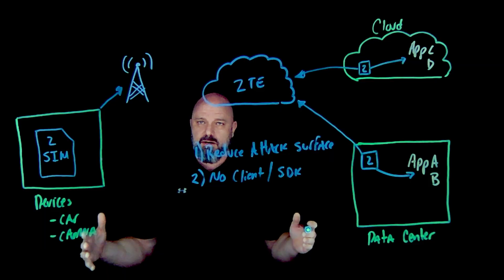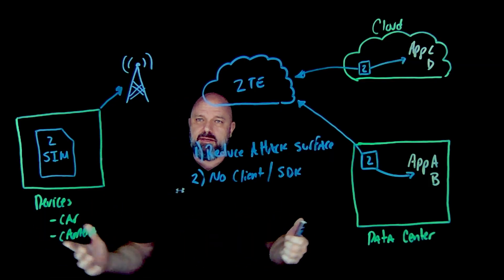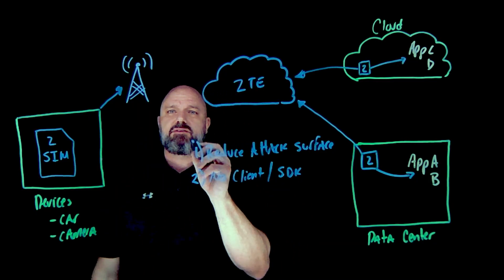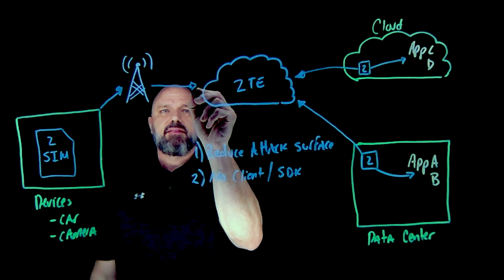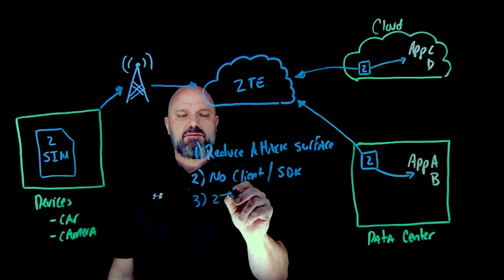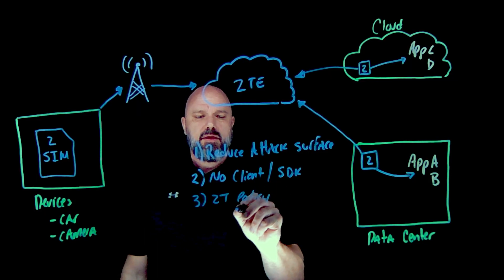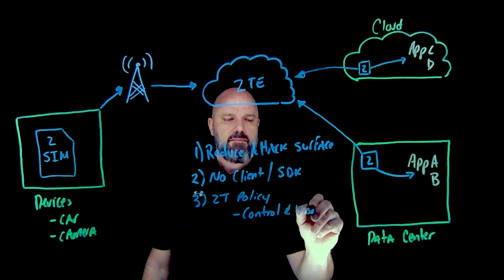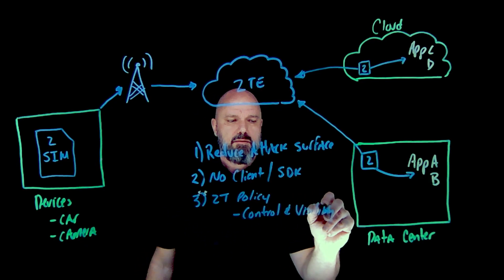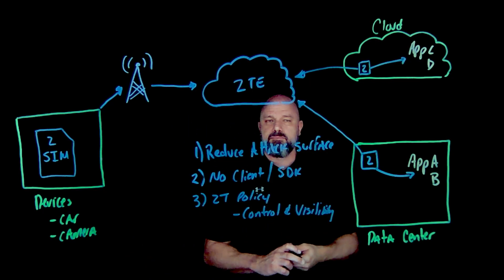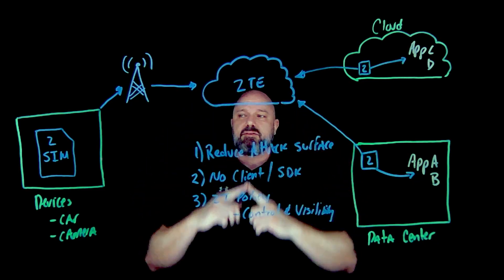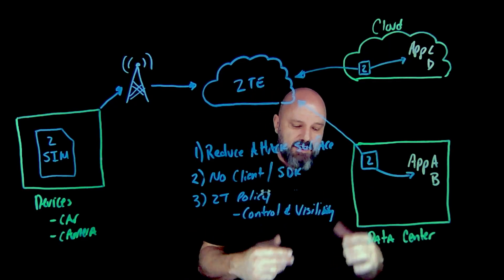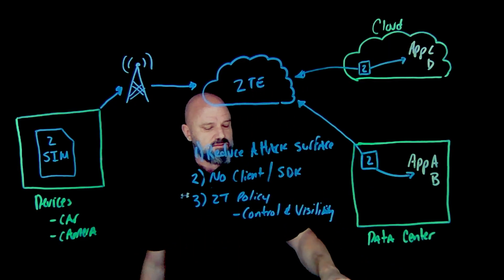It doesn't matter where that device is in the world — whether it's the US, APAC, or EMEA — this service works anywhere across any mobile network. The first stop for that traffic is the Zero Trust Exchange, which gives us the ability to enforce true zero trust policy, providing complete control and visibility into your traffic. We meet in the middle, as always, but without a client — letting devices communicate back to your applications without putting the device on the network.